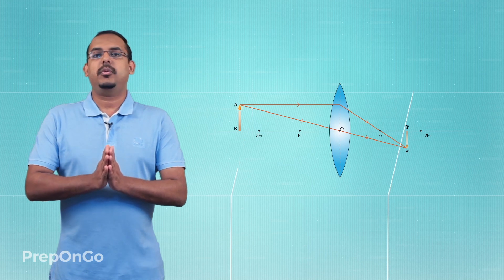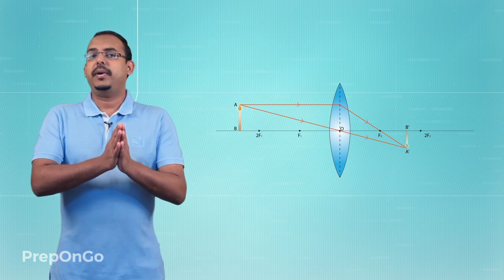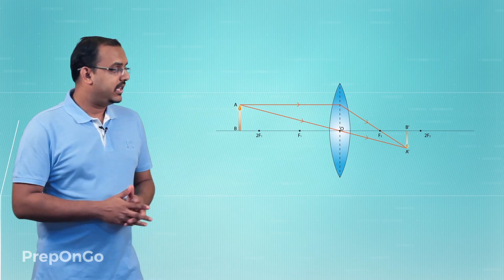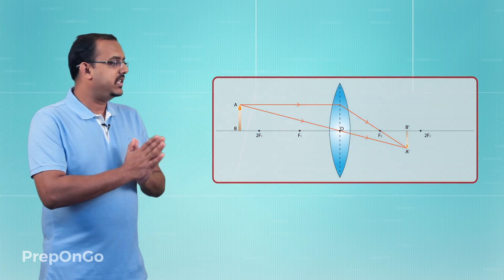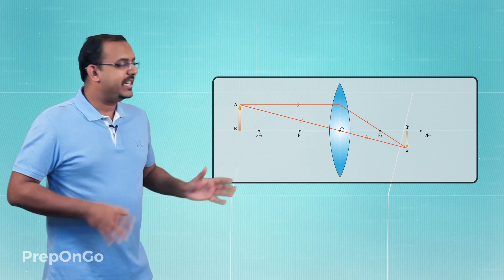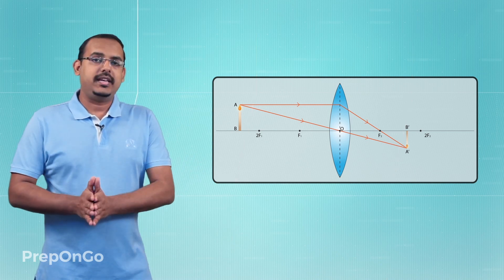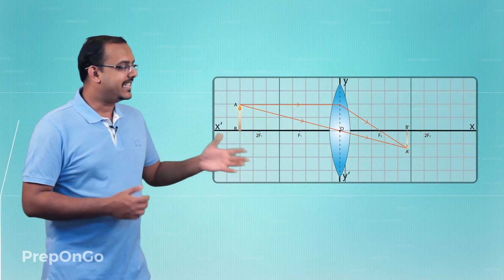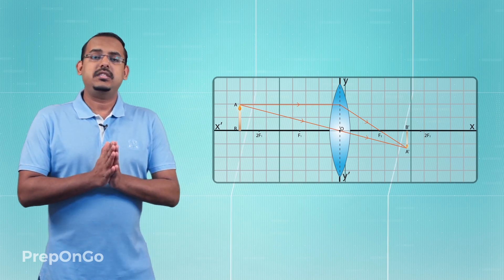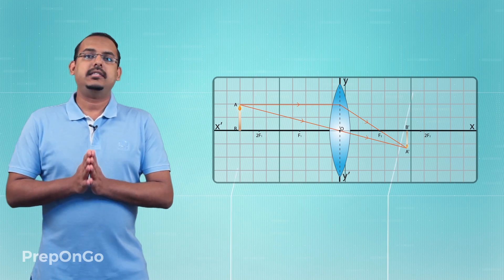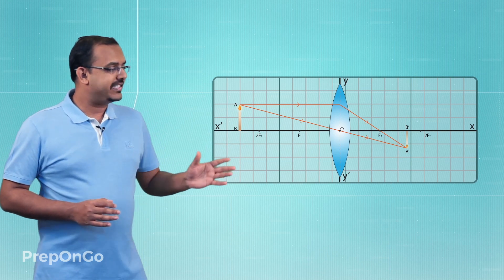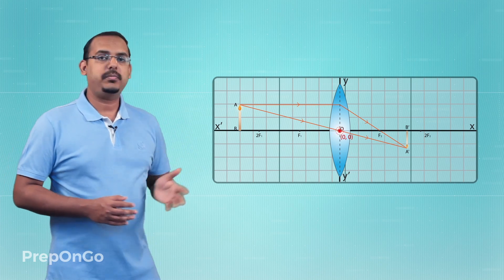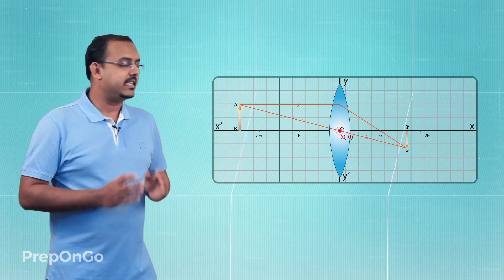The first thing when we are talking about sign conventions with respect to image formation, the first thing to keep in mind is that the complete plane in which the image formation is taking place, or the complete plane in which we have drawn the ray diagram, is assumed to be the Cartesian plane with the x and the y-axis. Now the lens is placed on the x-axis in such a manner that the optical center of the lens always coincides with the origin of the Cartesian plane, that is the point 0,0.